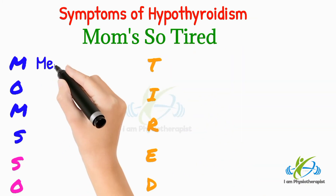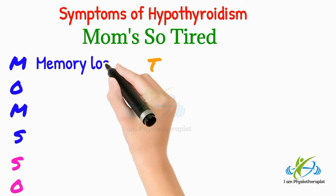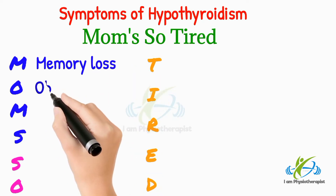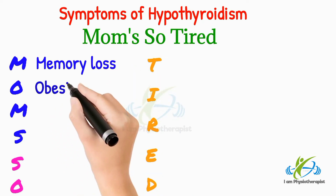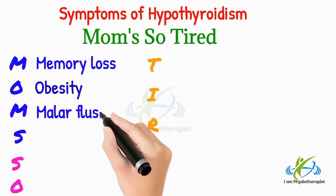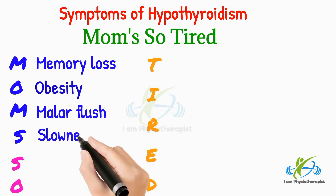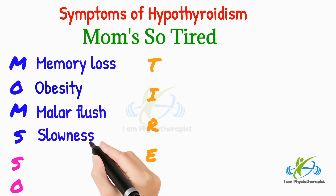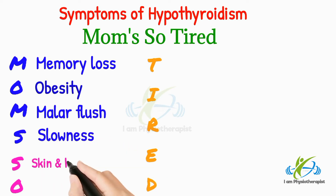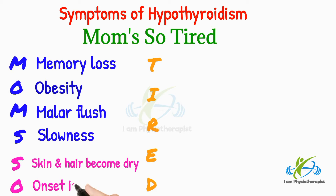M stands for memory loss. O stands for obesity. M stands for Malar Flush. S stands for slowness. S stands for skin and hair become dry. O stands for onset of hypothyroidism is gradual.